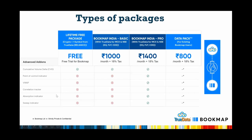In the free version you get cumulative volume delta, and also in the basic version. In the Bookmap India Pro version you get all the advanced add-ons. The free package allows one symbol at a time, the basic version enables three symbols at a time, and the pro version enables ten symbols at a time. The data pack only is for existing international Bookmap users who want to add Indian market data. For a detailed comparison, visit bookmap.truedata.in and scroll down to the comparison page.